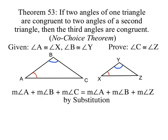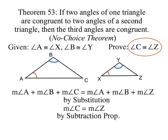By substitution, we can substitute angle A in for angle X on the right side, and angle B in for angle Y on the right side. Then we can take away the measure of angle A plus the measure of angle B from both sides, leaving us with the measure of angle C equal to the measure of angle Z, which is what we were trying to prove. We've just proven the No-Choice Theorem.